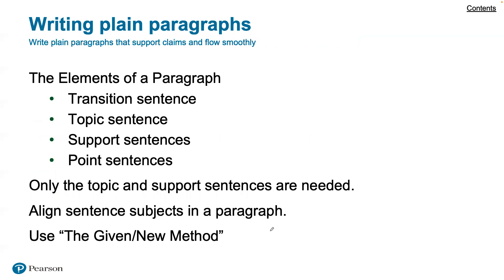The next level is writing plain paragraphs. The elements of a paragraph include a transitional sentence — showing how you got from the previous topic — the first sentence as the introduction, supporting sentences, and then the point sentence. So you have the introduction, the body, and the closing, similar to what we've had before, each with its key points.